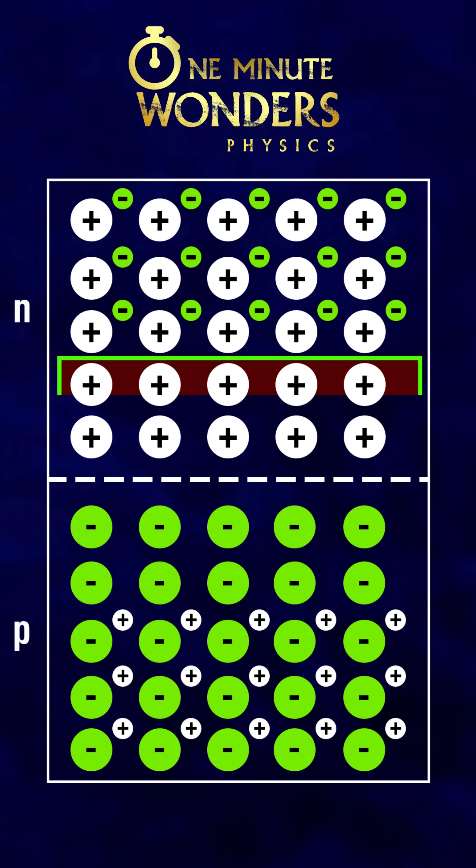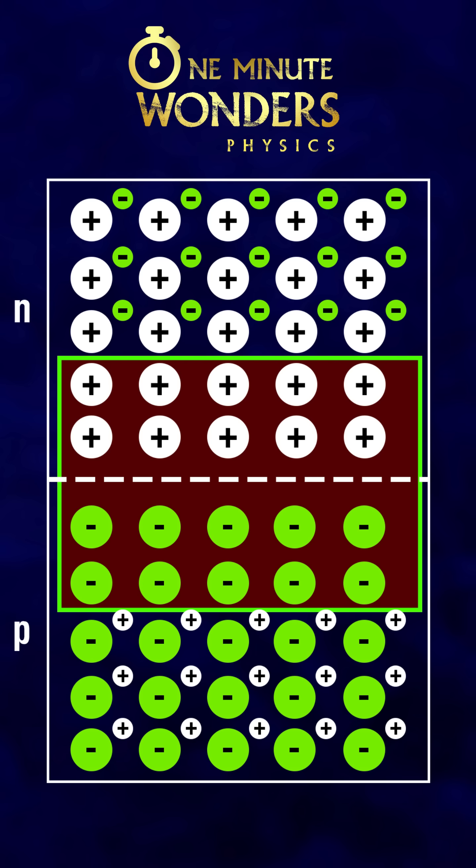Now we can see a space near the P-N junction where there are no charge carriers. This region is called the depletion region.